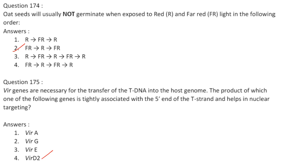Oat seeds will not germinate when exposed to red light and far-red light in a specific order. Red light converts phytochrome to its active form Pfr, triggering plant growth. Far-red light converts Pfr back to Pr (inactive form), inhibiting growth. If you treat first with far-red (no growth), then red (growth), then far-red again — no germination. Answer is option 2. Vir genes are necessary for T-DNA transfer. The product of VirD2 is tightly associated with the 5' end of the T-strand and helps in nuclear targeting. Answer is option 4.